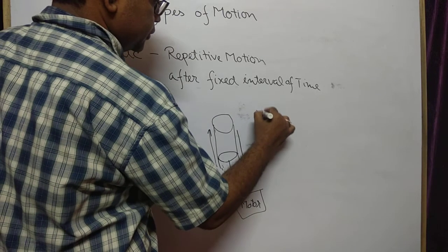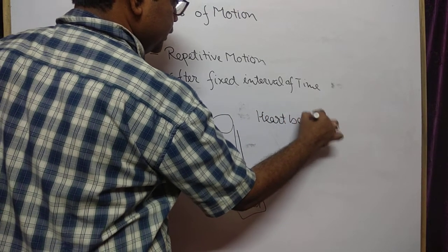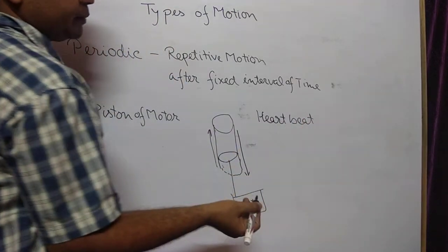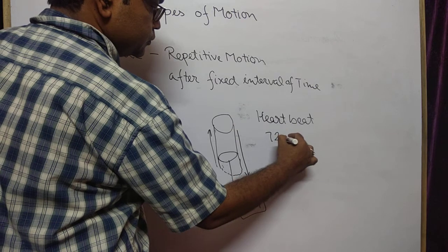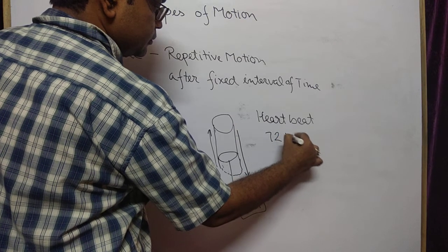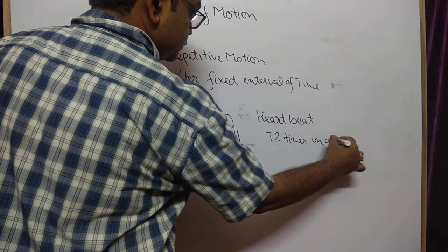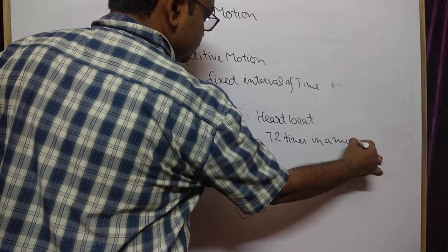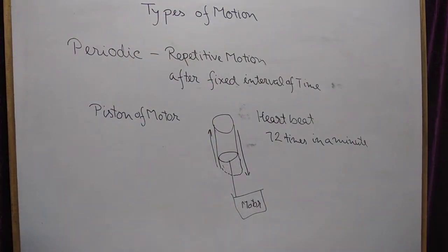Another common example is the heartbeat. The heartbeat of a healthy man is 72 times per minute. This is also periodic motion.